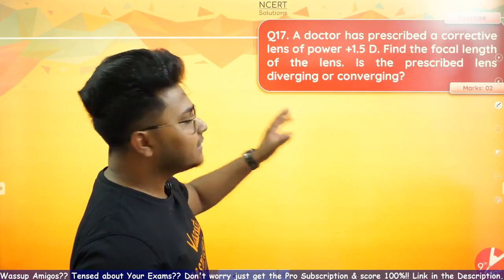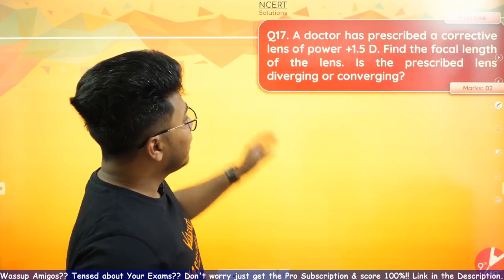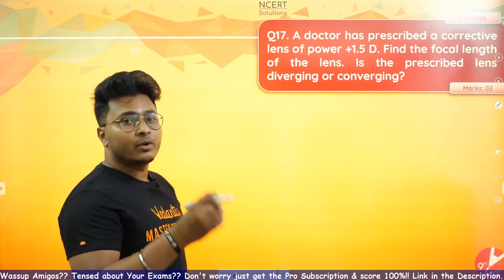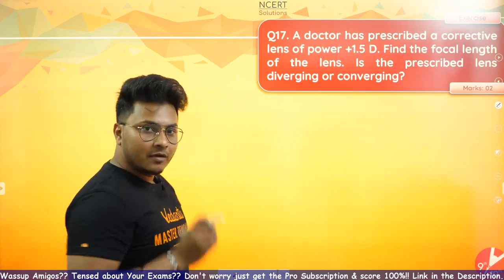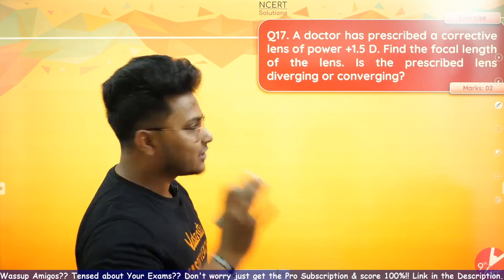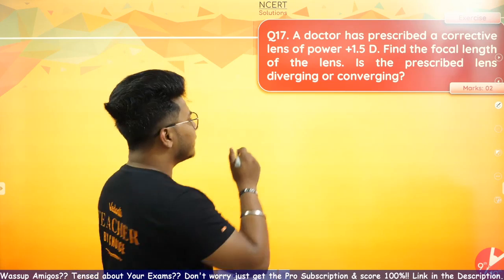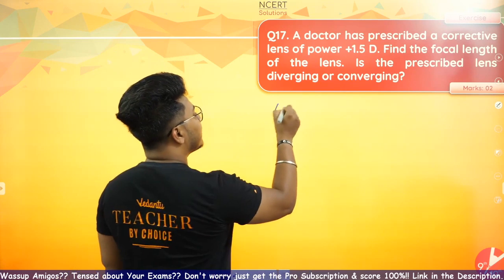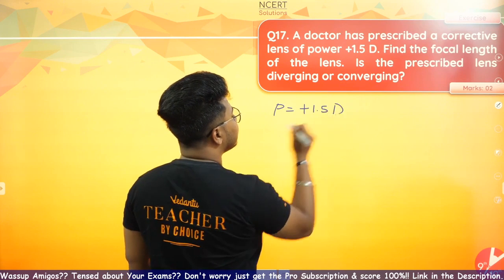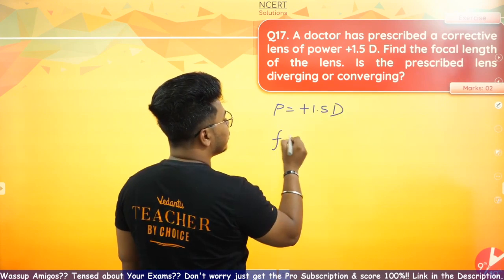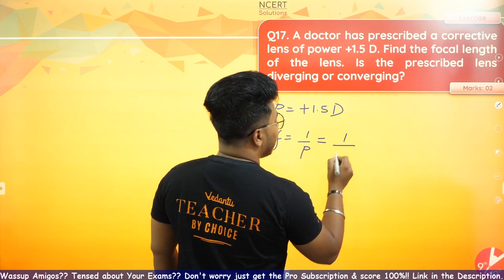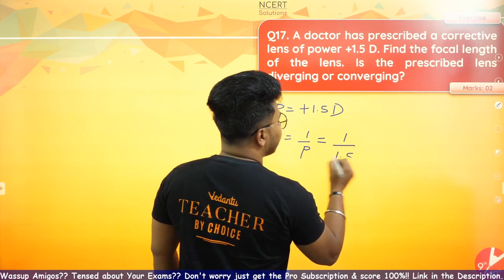The second question: a doctor has prescribed a corrective lens of power plus 1.5D. The positive power tells you it should be a convex lens. Find the focal length — focal length equals 1 upon power, that is 1 upon positive 1.5.